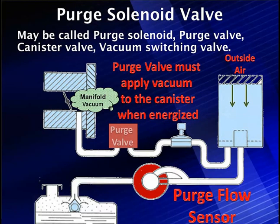It may be called a purge solenoid, purge valve, canister purge, vacuum switching valve, vapor pressure monitor — whatever. It's simply going to control the vacuum and only apply vacuum to the canister when we want it to and when the computer is going to energize it to do this.